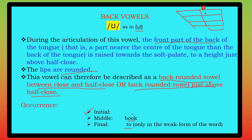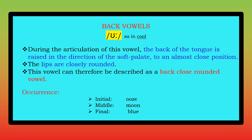The short 'oo' is used mainly in the final position — weak form of the word. So it is only used in the weak form, not in the strong form. Next is the same 'oo' but long 'oo'. During the articulation of this vowel, the back of the tongue is raised in the direction of the soft palate to an almost close position. The lips are closely rounded.